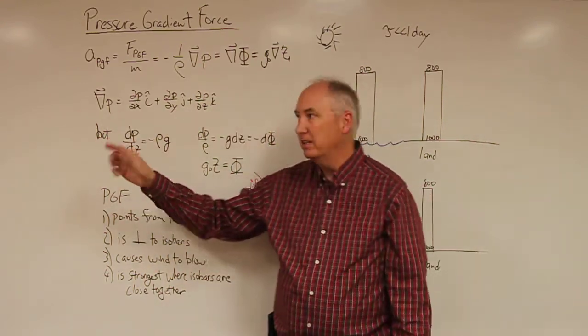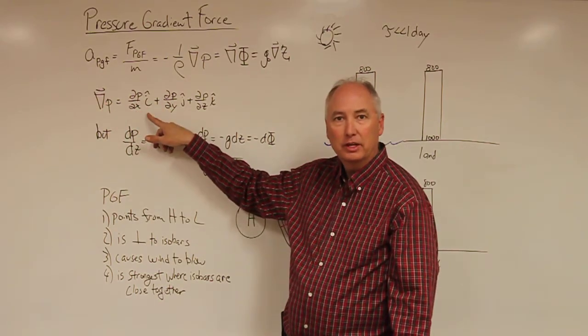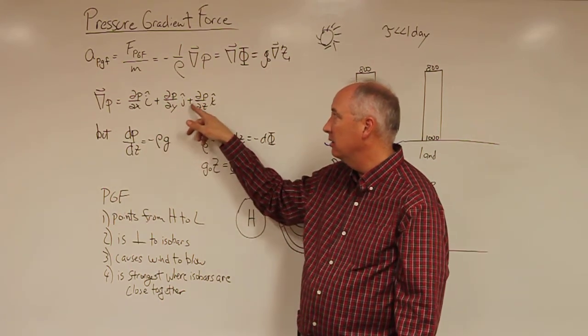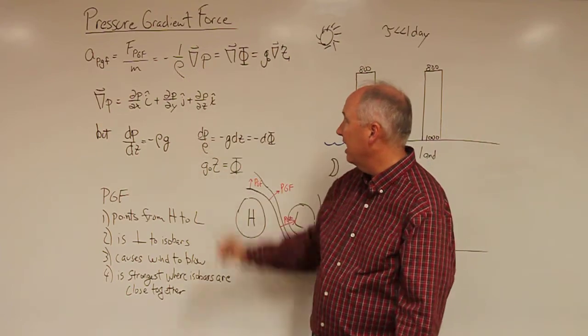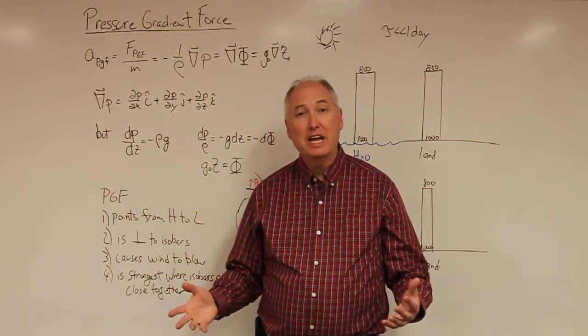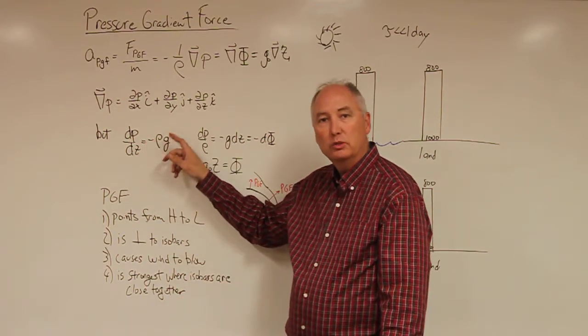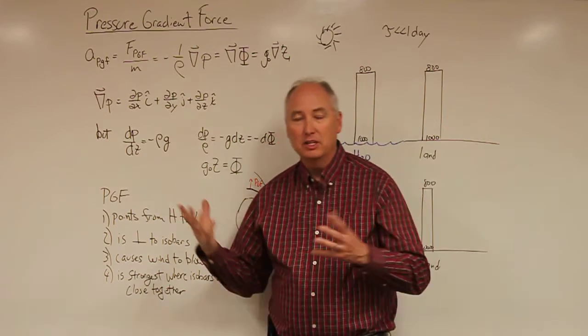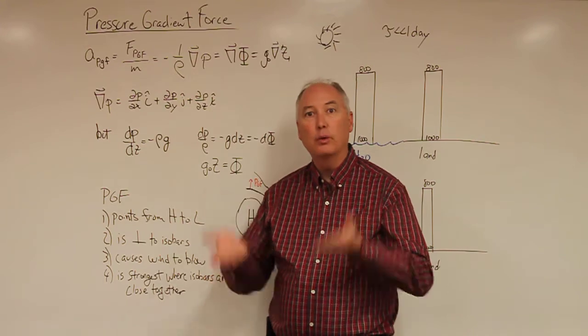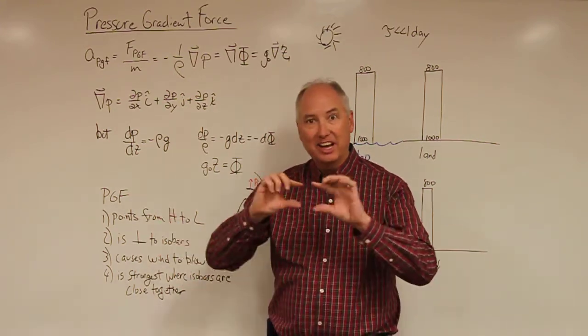If you remember from last time, the gradient of a scalar is partial p over partial x in the i-hat direction, plus partial p over y in the j-hat direction, plus partial p over partial z in the k-hat direction. But you also might recall that the hydrostatic assumption is that dp by dz is equal to minus rho g. So that assumption is that the atmosphere is not moving away from the surface or down towards the surface. It's the hydrostatic, which is the not moving fluid equation.